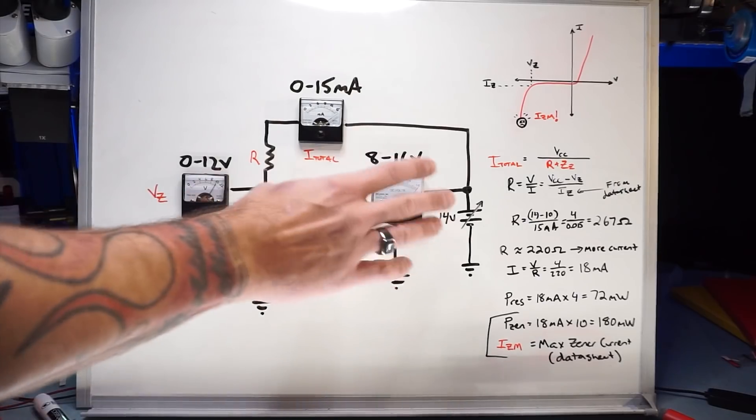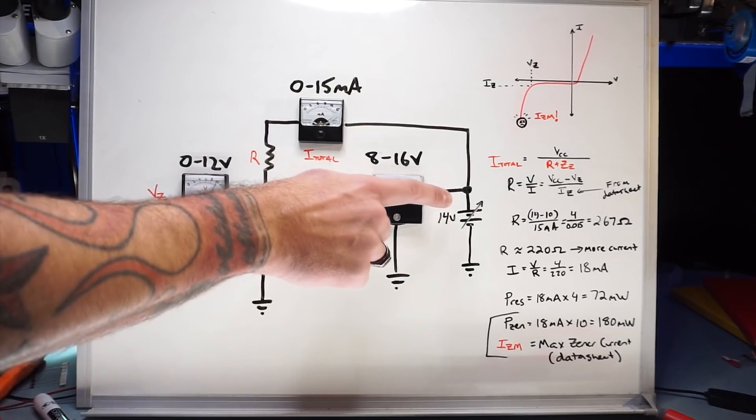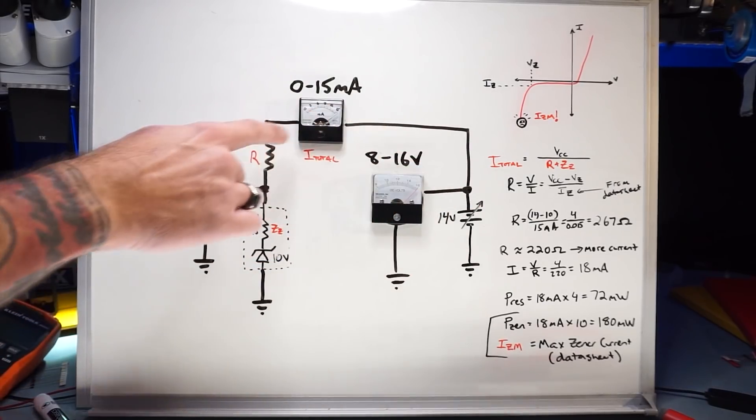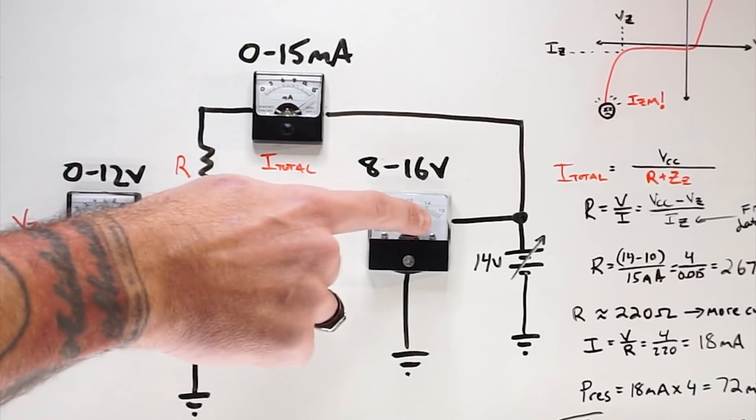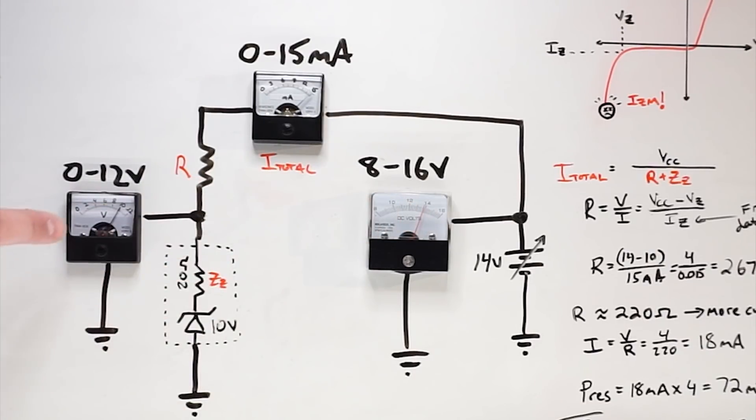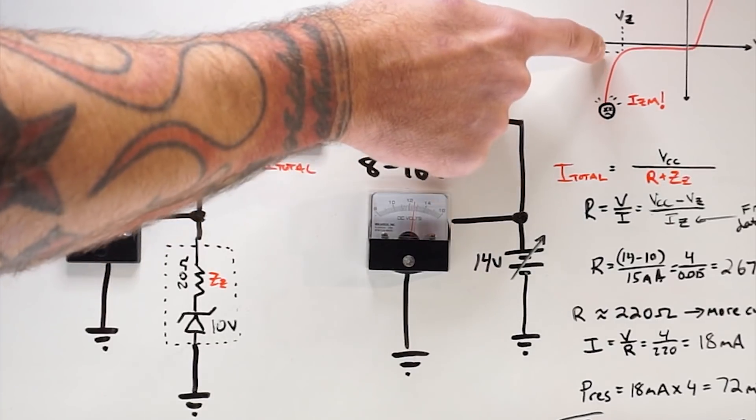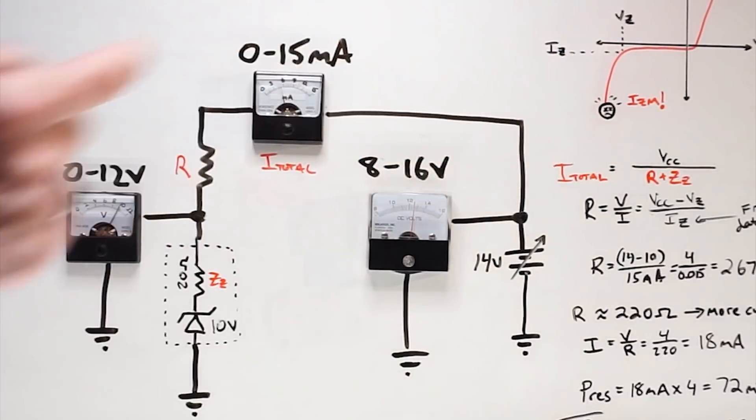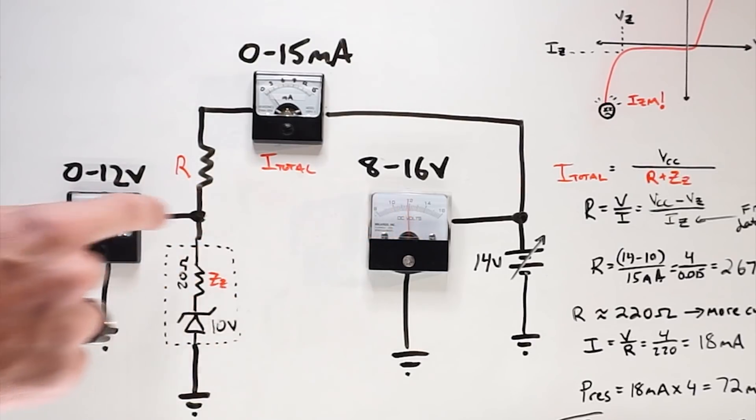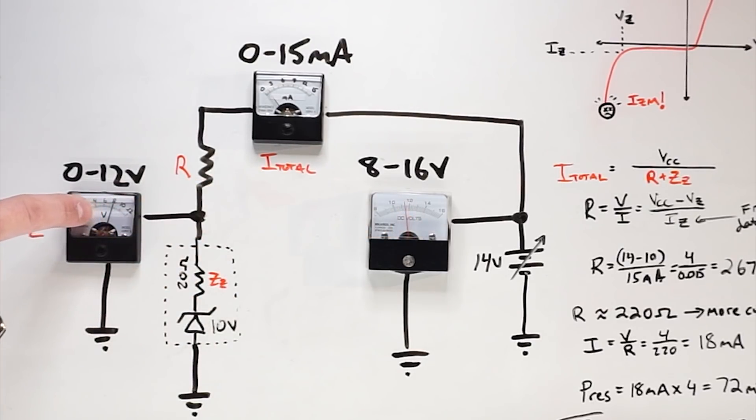If I were operating this as a power supply regulator and my supply line voltage had sagged too far, which I'm kind of doing here, eventually this guy falls out of regulation. We're coming out of this knee voltage back and turning the diode off. So when I get down past a certain point, my power supply regulator is failing.